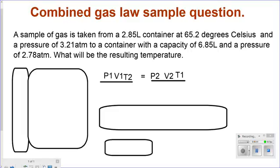The question says: a sample of gas is taken from a 2.85 liter container at 65.2 degrees Celsius and a pressure of 3.21 atm to a container with a capacity of 6.85 liters and a pressure of 2.78 atm. What will be the resulting temperature?